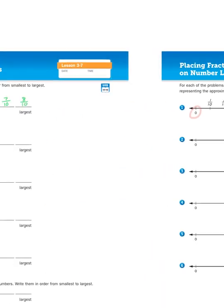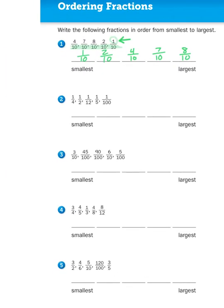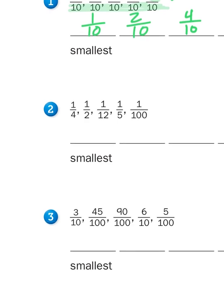So, let's look at some of the other problems. Problem number 2, on the other hand, does not have like denominators. They have unlike denominators. If you take a look, I have 1 fourth, 1 half, 1 twelfth, 1 fifth, and 1 one hundredth. They have unlike denominators. However, if you notice at the top, they all have like numerators. Meaning that we are comparing 1 part out of each total number of parts.